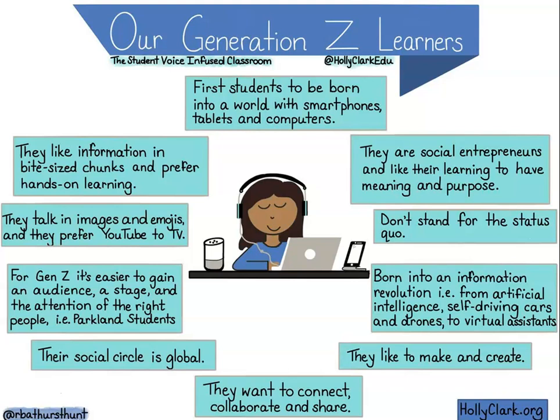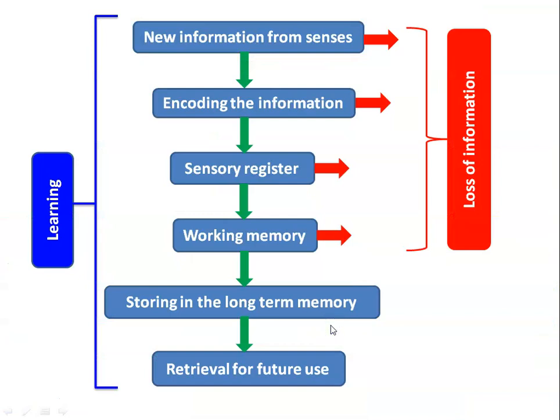Understanding their characteristics and learning ability, we have to plan our teaching accordingly. This is how learning takes place in the mind of any individual: new information from the sense organs is encoded and passes through a sensory register, then goes to working memory.